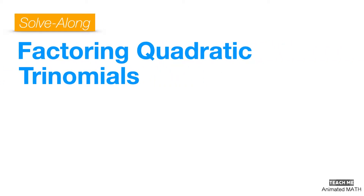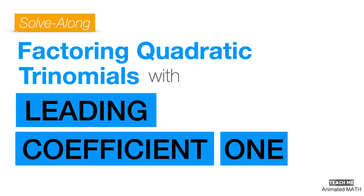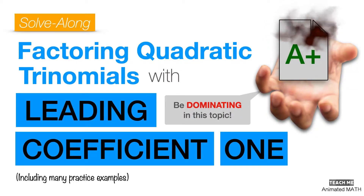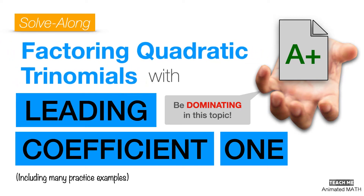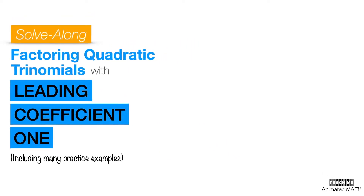In this solve-along video, we'll explore how to factor quadratic trinomials with leading coefficient 1, and we'll do this extensively so that you can dominate your exams. There are plenty of scenarios for factoring general quadratic trinomials, which is why we split it up in bite sizes so that it is much easier to understand. This is the first part and we'll focus on factoring quadratic trinomials with leading coefficient 1.